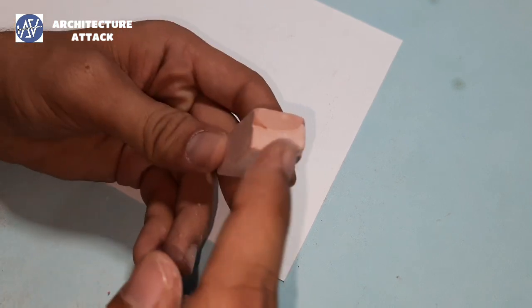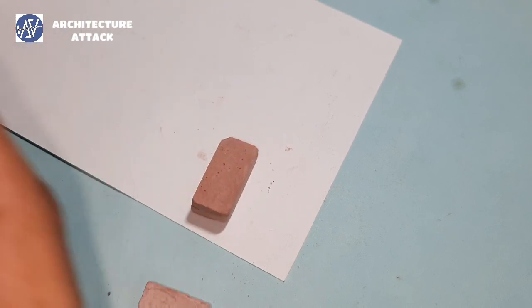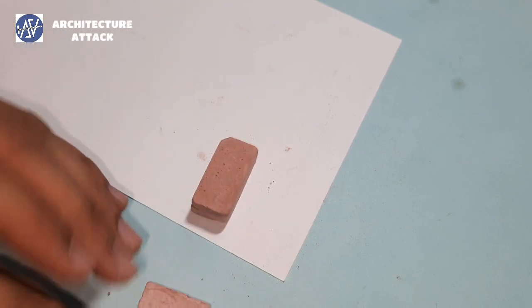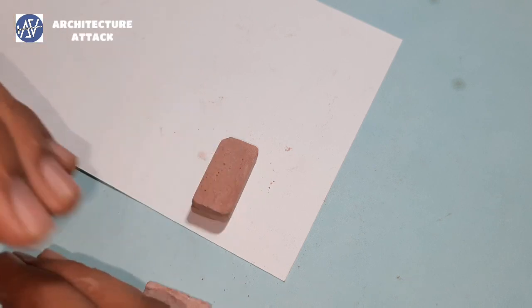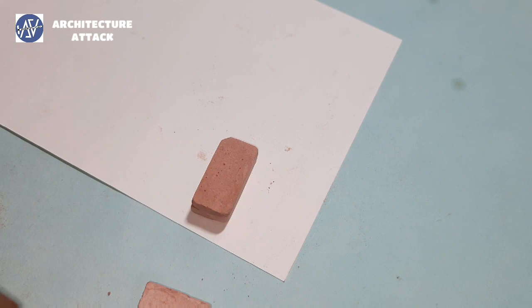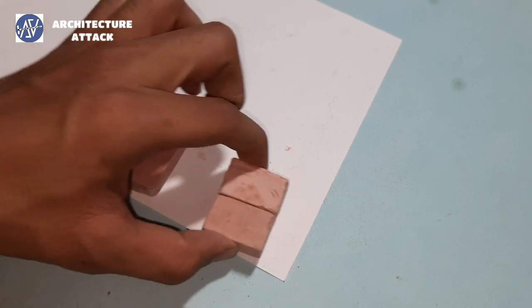So in header bond, what we see is whenever we see a header bond wall in elevation, we only get to see headers. So let us start.